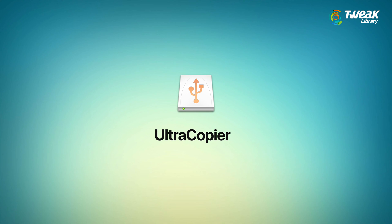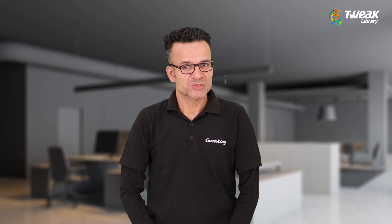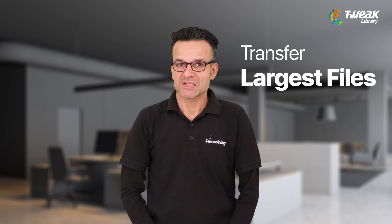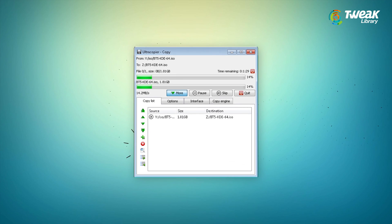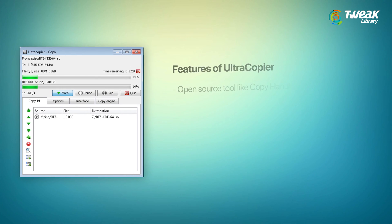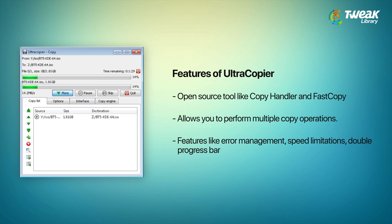The fifth utility is Ultra Copier. You can use this ultrafast tool to transfer the largest files seamlessly. It saves a lot of your time working on smart algorithms. It is an open source tool like Copy Handler and FastCopy. You can customize it to optimize usage. It allows you to perform multiple copy operations. It also offers other useful features like error management, speed limitations, double progress bar, and more.